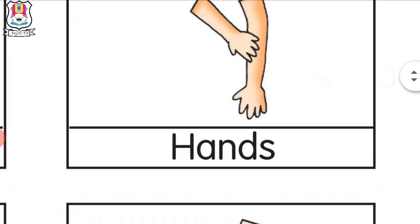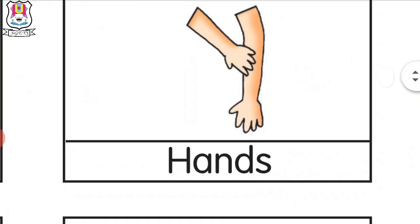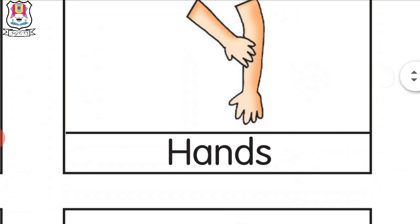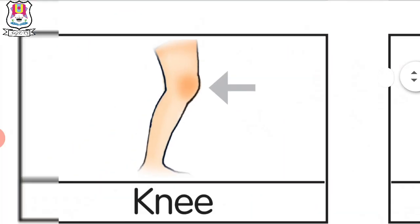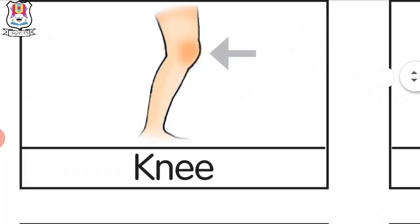What is this? Hands. We have two hands. How many hands do we have? Two hands. What is next? Knee. Our knee. What do we say? Knee.